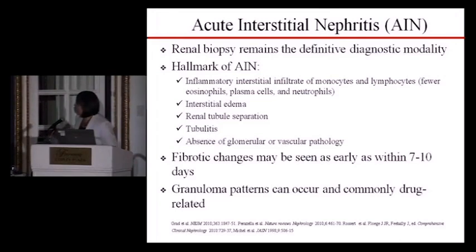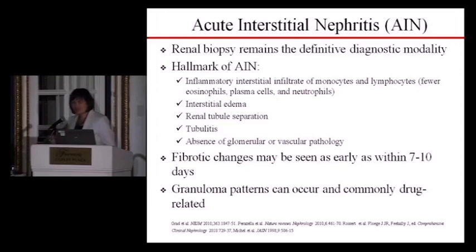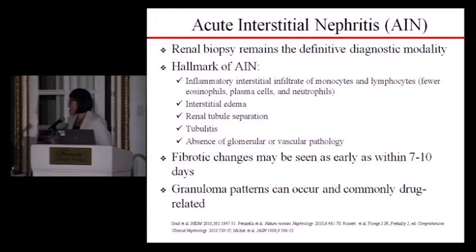In AIN, the most common interstitial inflammatory cells are T cells — most commonly monocytes or lymphocytes. A fibrosis pattern can be seen as early as 7 to 10 days, and granuloma patterns can occur, commonly drug-related.